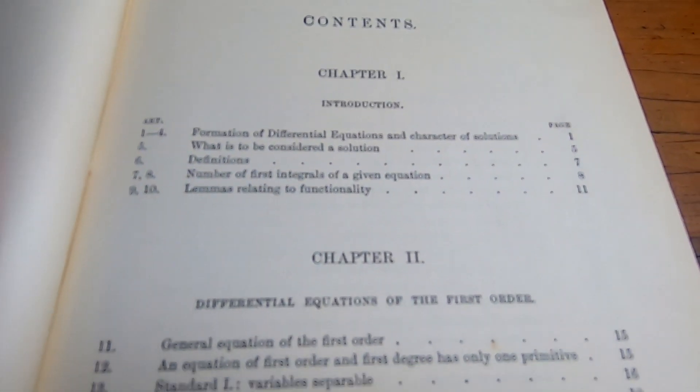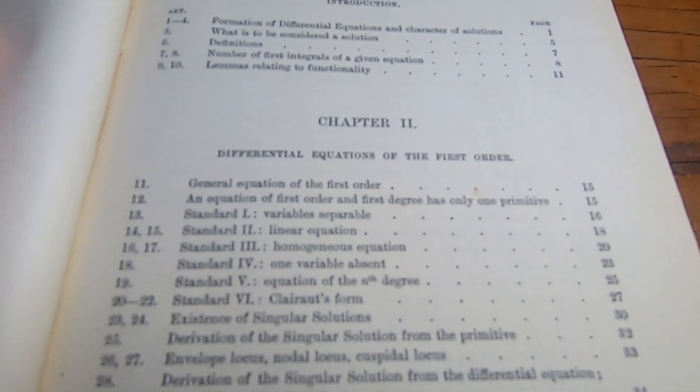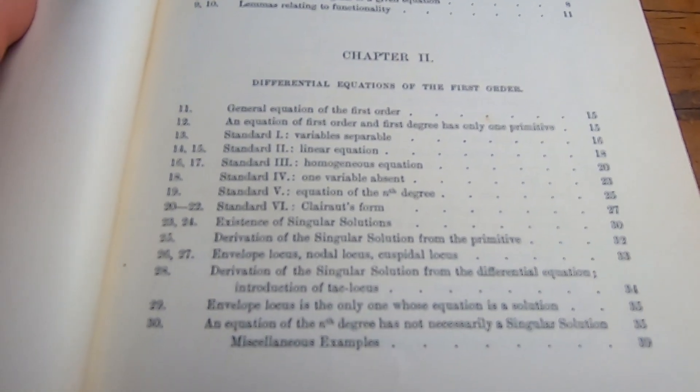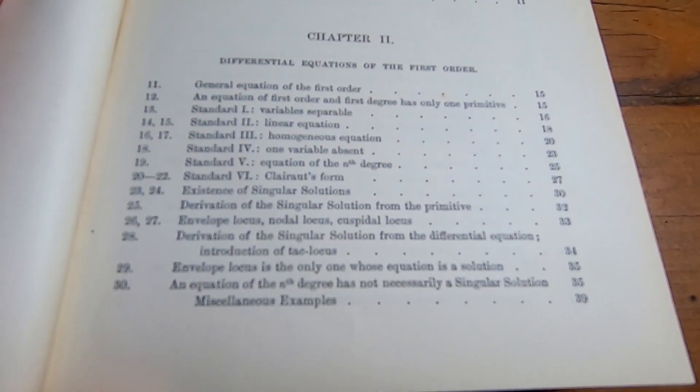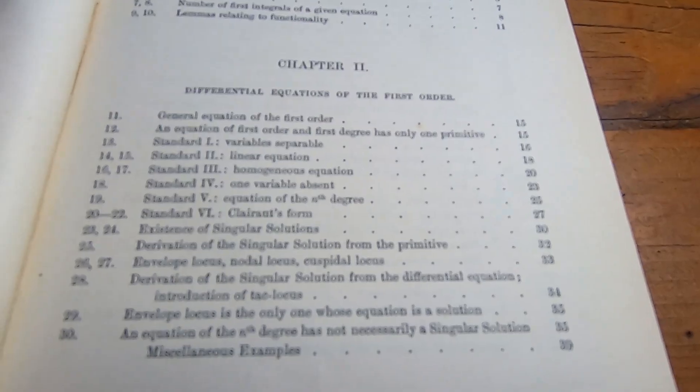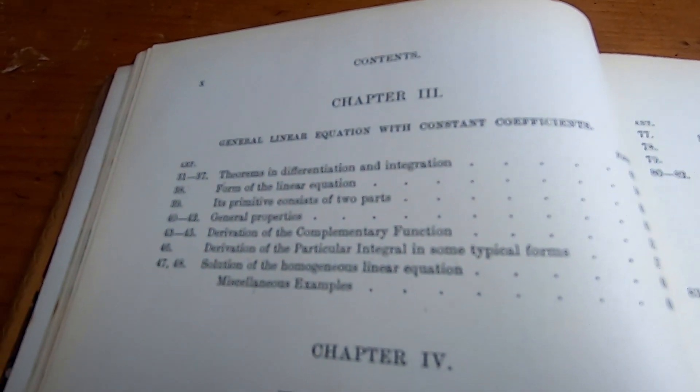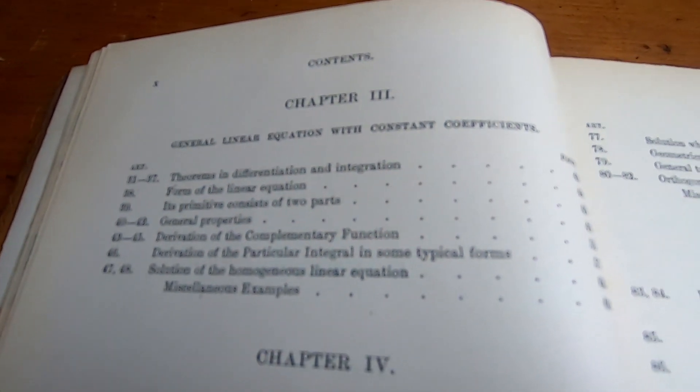So chapter one is an introduction. Chapter two is on differential equations of the first order. Look at the long names of the sections. He really breaks it down. Lots of little tiny sections. Chapter three is on the general linear equation with constant coefficients.